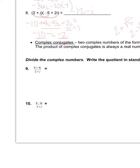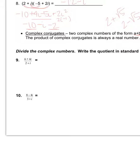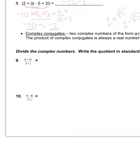Now we're going to divide complex numbers and write the quotient in standard form. When dividing, we want to eliminate the imaginary part in the denominator by multiplying by the conjugate. I have 6 plus 4i over 2 plus i, so I multiply both the top and bottom by the complex conjugate of the denominator, which is 2 minus i. Since 2 minus i over 2 minus i equals 1, we're not changing the value of the fraction.